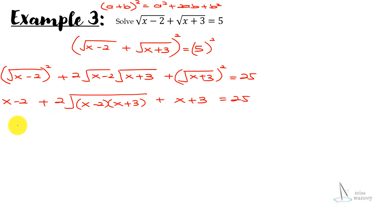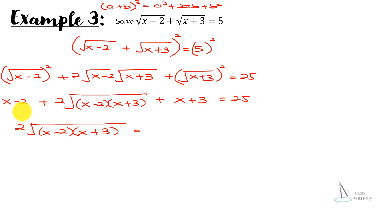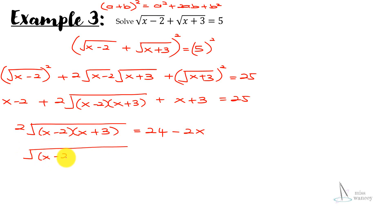Isolating the surd on the left: 2·√((x−2)(x+3)) equals 25 minus 3 minus 2x plus 2, which simplifies to 24 minus 2x. Dividing everything by 2 gives √((x−2)(x+3)) equals 12 minus x.